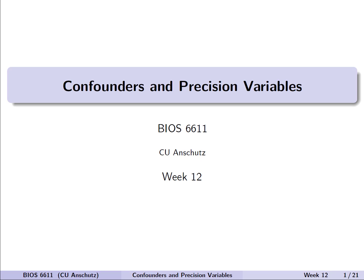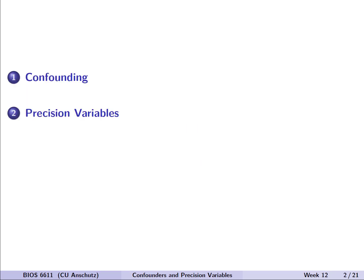Greetings Bio 6611. In this lecture we're going to introduce the roles that variables in multiple linear regression can play, including confounders and precision variables to start with. We'll first introduce confounding and then end with precision.